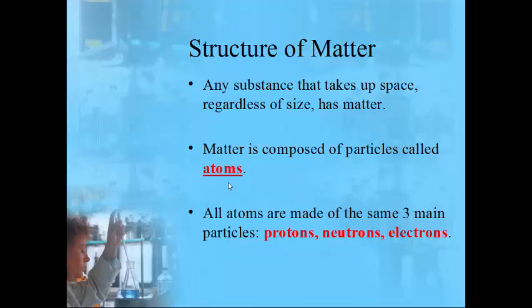All atoms have three principal components: protons, neutrons, and electrons. There are parts smaller than these, but these are the three main ones we'll focus on. You'll need to know where they're found in the atom and what type of electrical charge each one has.